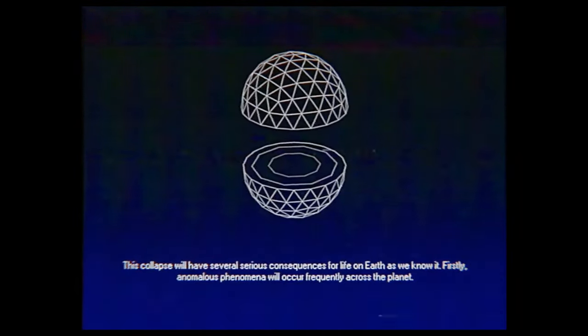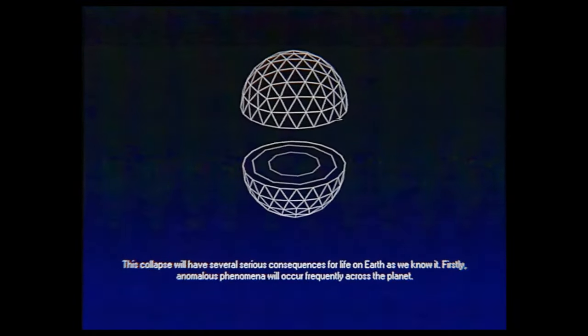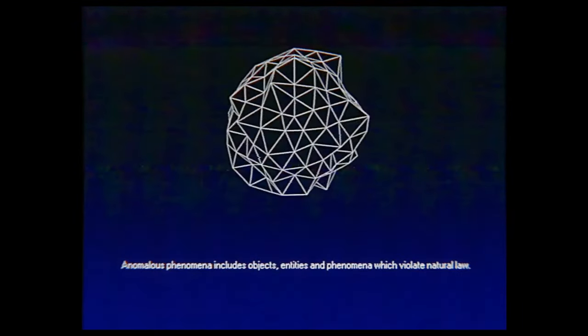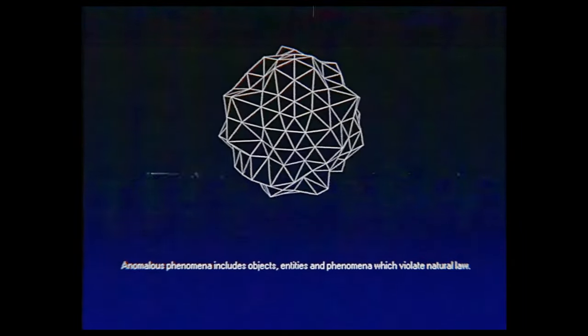This collapse will have several serious consequences for life on Earth as we know it. Firstly, anomalous phenomena will occur frequently across the planet. Anomalous phenomena includes objects, entities, and phenomena which violate natural law.